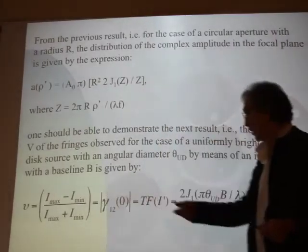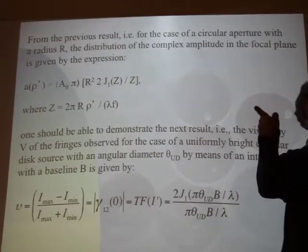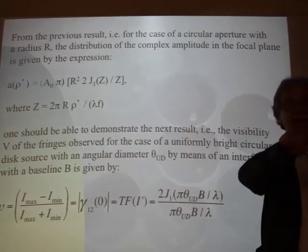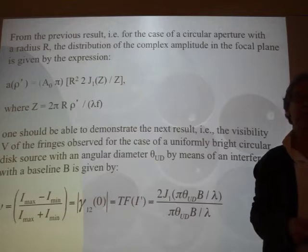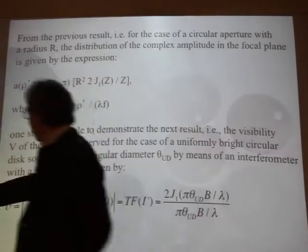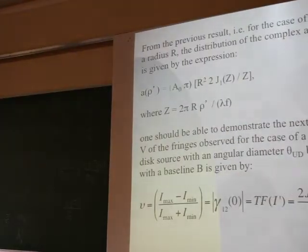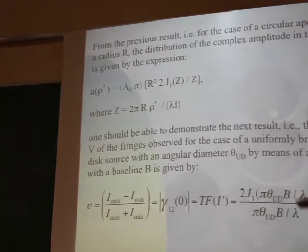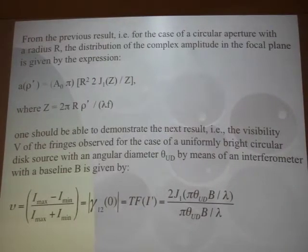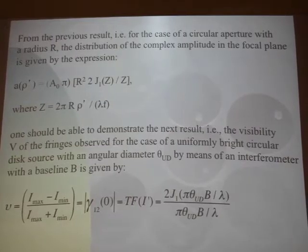During the last lecture, we said: we know that the visibility, when observing with an interferometer made of two telescopes, is given by the Fourier transform of the normalized intensity distribution of the source. If the source is circular, it's exactly the same problem. So we found the expression for the visibility by analogy. This was an important result.